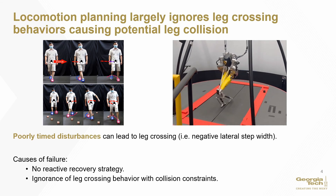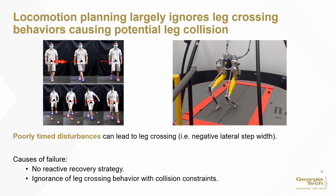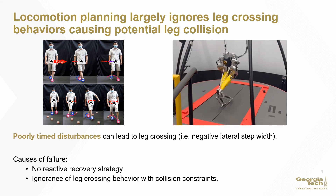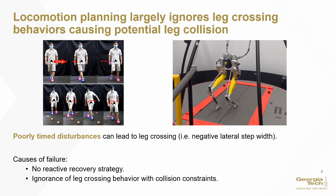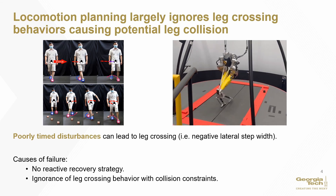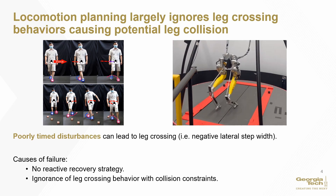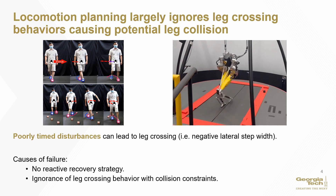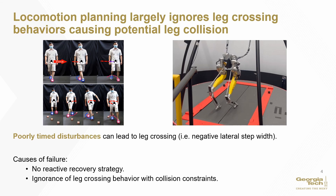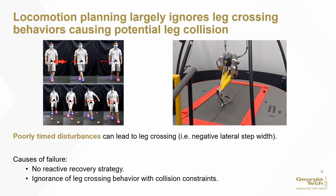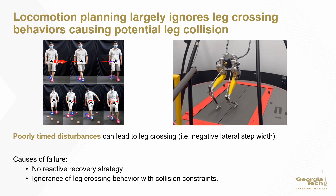A robot can fall due to poorly timed disturbances where collision constraints can arise. We can leverage cross-legged motion, which humans use under these constraint-gated circumstances. Most locomotion planners also don't consider high-level task planning logic at a locomotion level, making complex motions difficult to compose.